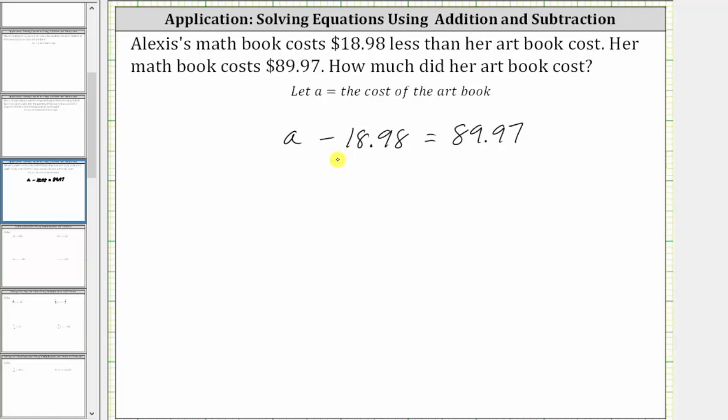Now to solve for A, we add $18.98 to both sides of the equation. Now we simplify. Here the sum is zero, the left side simplifies to A. We have A equals.